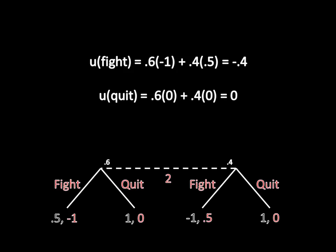If she fights, then 60% of the time she'll have actually been facing the strong type and she'll receive a payoff of negative 1. 40% of the time she'll have been facing a weak type and receive a payoff of 0.5. So if we take the weighted average of negative 1 and 0.5, and do a simple bit of multiplication and addition, we get an expected utility in total of negative 0.4.